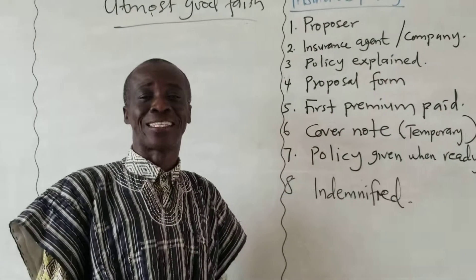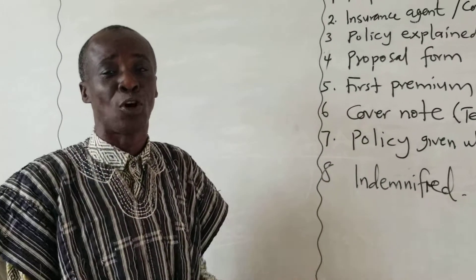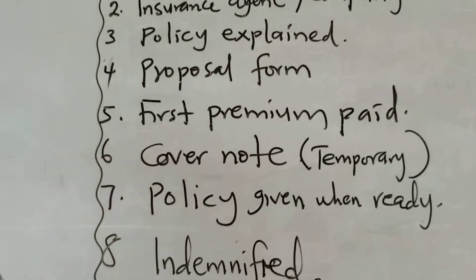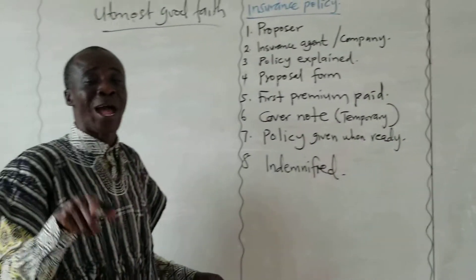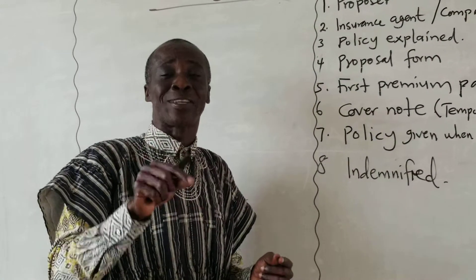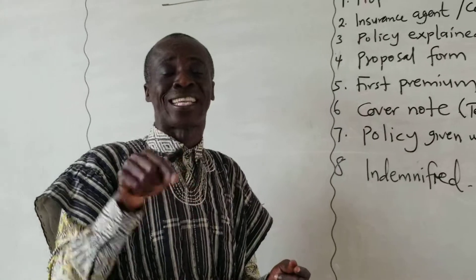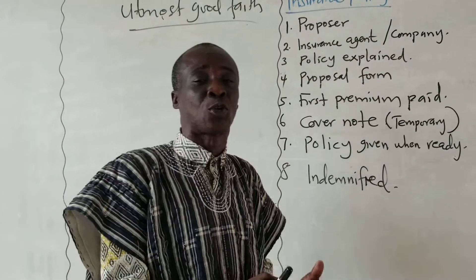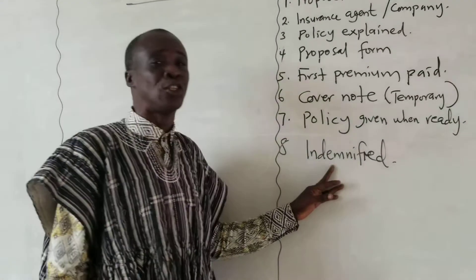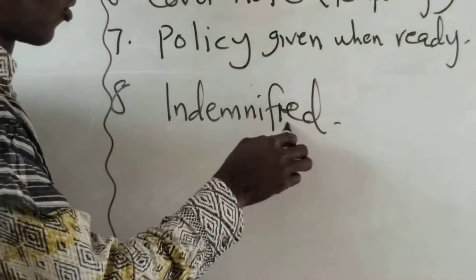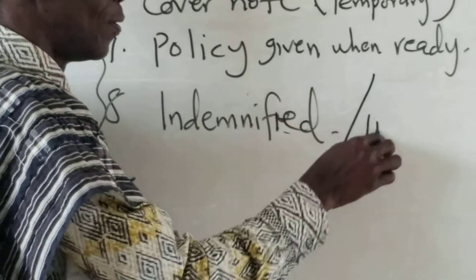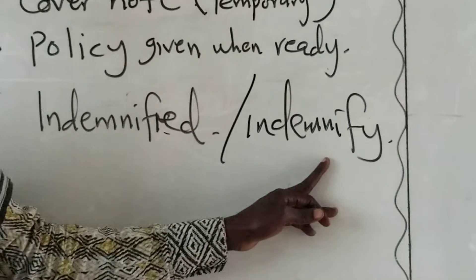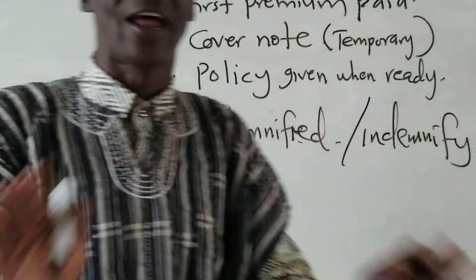Once you have done that, the actuaries will calculate the premium to be paid. You then pay your first premium and the policy starts. That contract you have entered into — where you agree to pay a premium and they agree to indemnify you — means they will restore you back to your former position. However, the policy document itself will not be ready on that day.